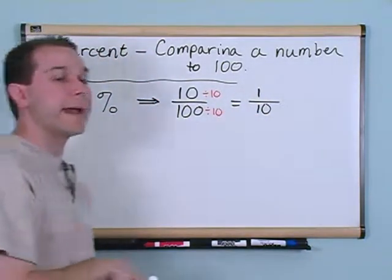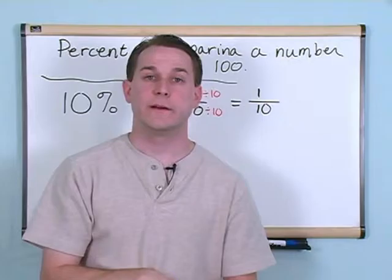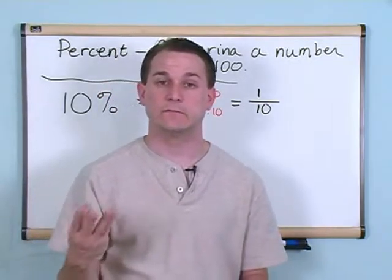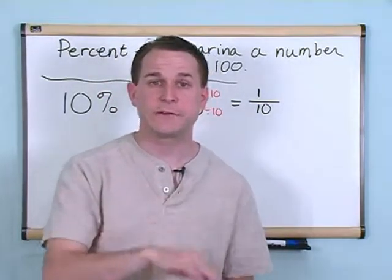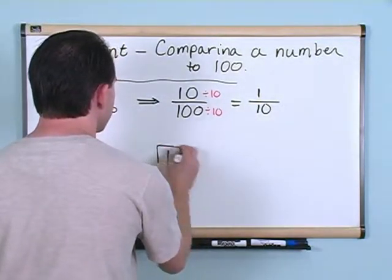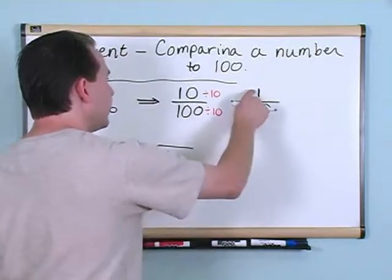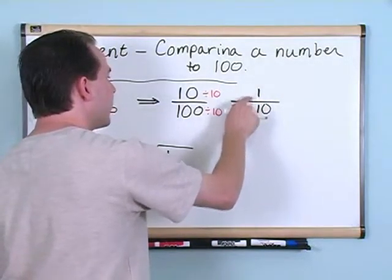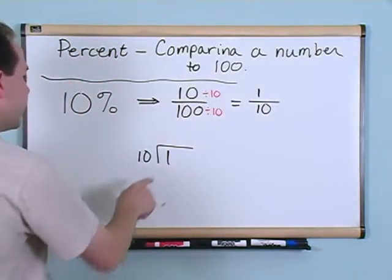Now if you go back and look at the section on dividing decimals or dividing fractions, you could set up a division here. You could say 1 and I can divide 10 into it. This is 1 divided by 10. That's what a fraction is, 1 divided by 10. And I can do this.